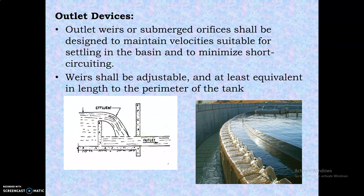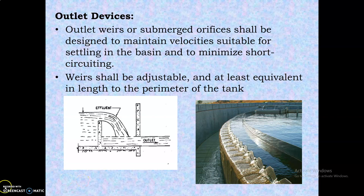For the outlet device, outlet weirs or submerged orifices shall be designed to maintain velocities suitable for settling in the basin and to minimize short circuiting. Rectangular small weirs, bevel walls, crested-type weirs, and orifices are used to maintain uniform velocity as the effluent leaves the sedimentation tank.